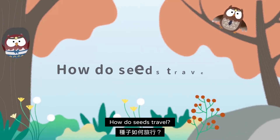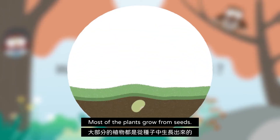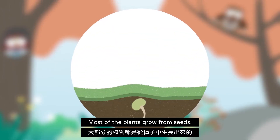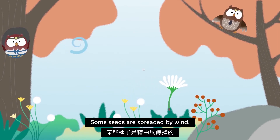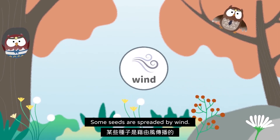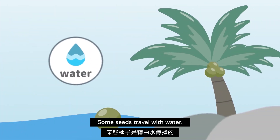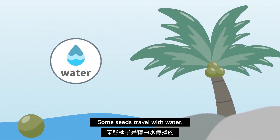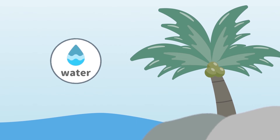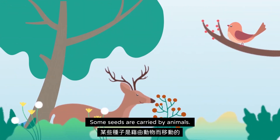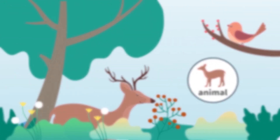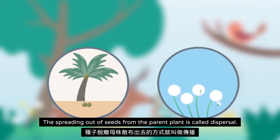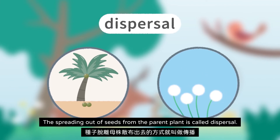How do seeds travel? Most of the plants grow from seeds. Some seeds are spread by wind, some seeds travel with water, and some seeds are carried by animals. The spreading out of seeds from the parent plant is called dispersal.